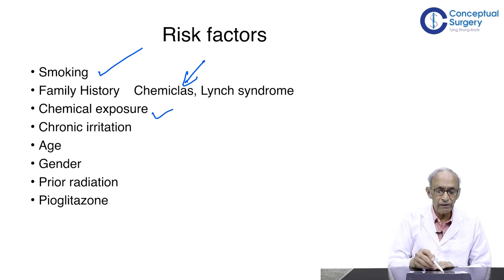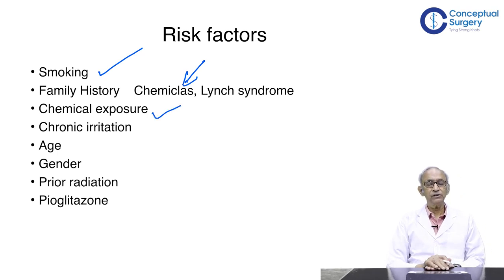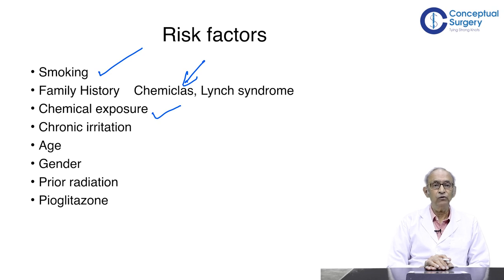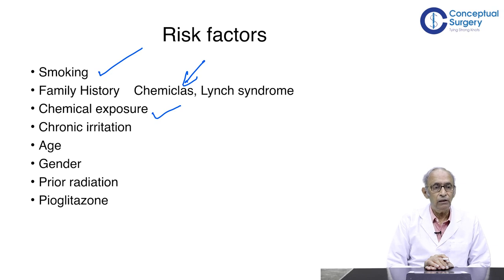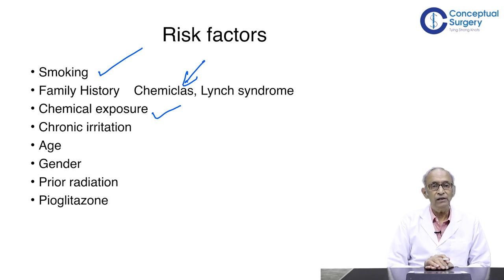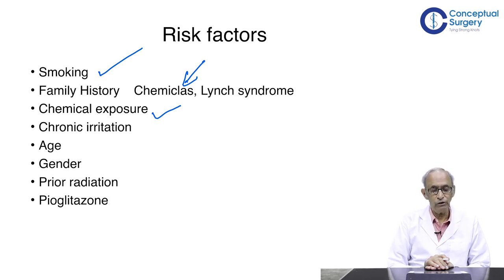Chemical exposure, particularly aniline dyes, was among the first chemicals found to be incriminating. People who work in dye manufacturing industries, printing presses, and similar industries face constant exposure to chemicals which are discharged in the urine, where they contact the urothelium and are carcinogenic in nature.